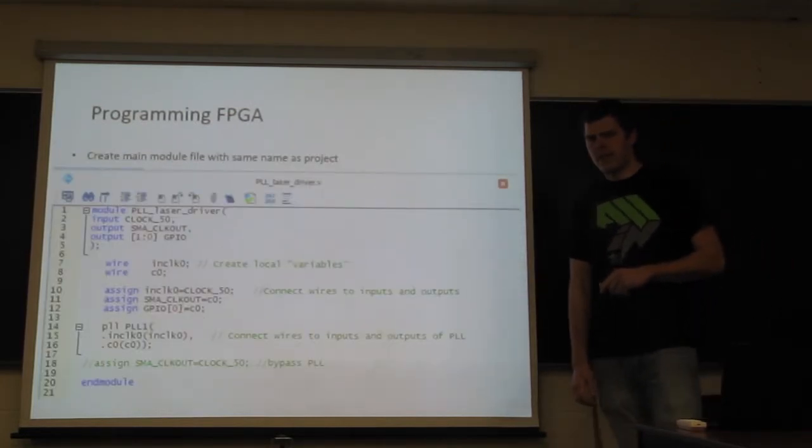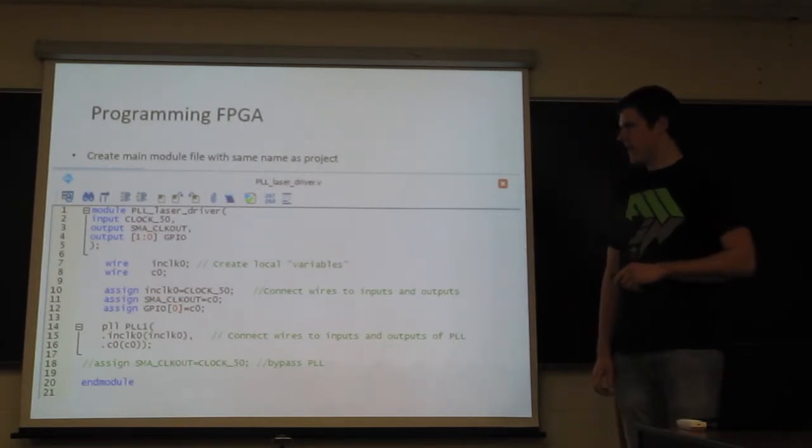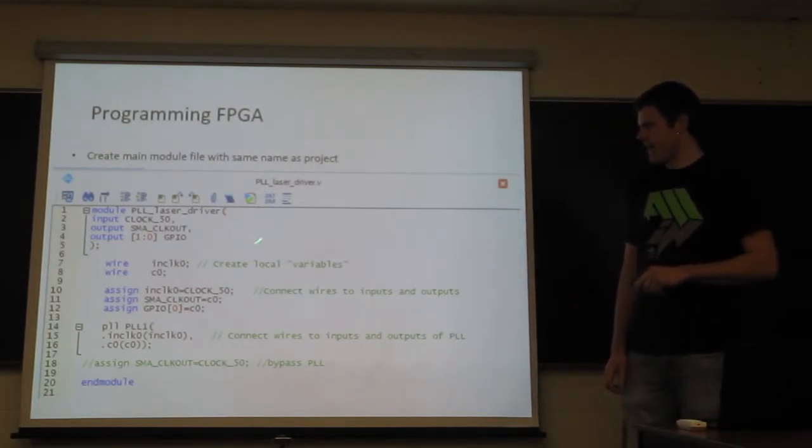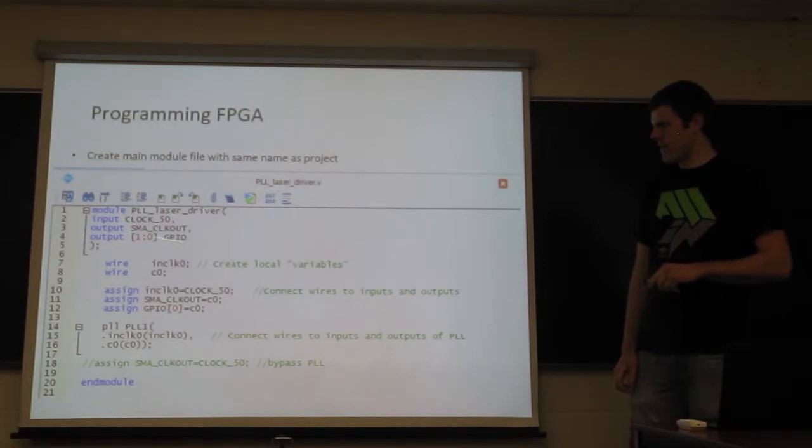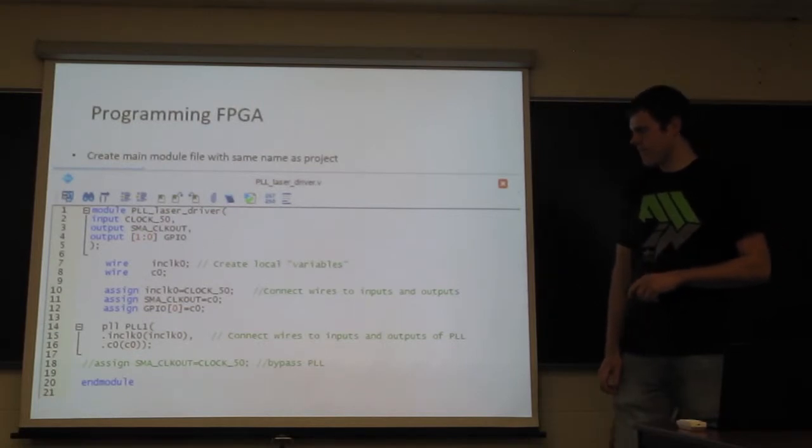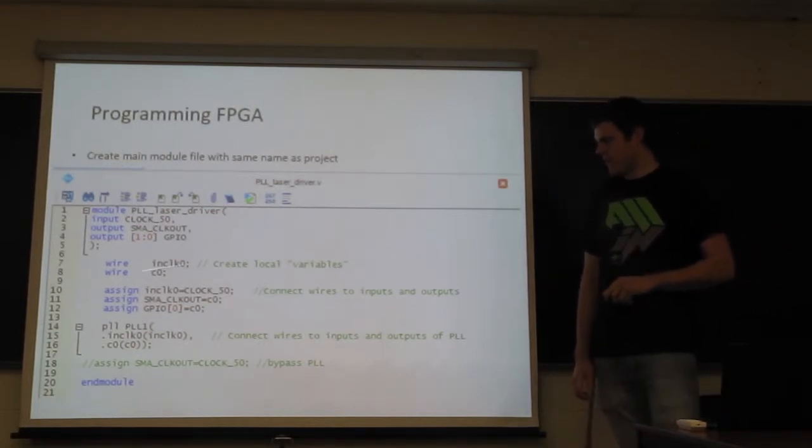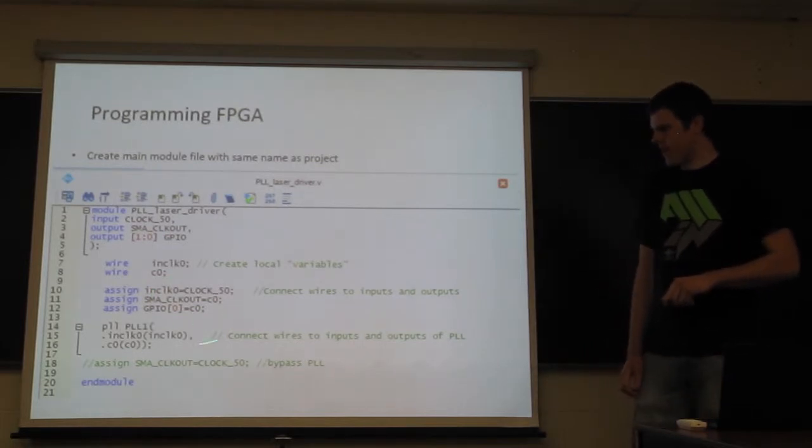Now that you've done that, you can create your very simple main module where you have your inputs from your pin assignments or your outputs. You'll have some local variables, and then you'll have your phase locked loop function.